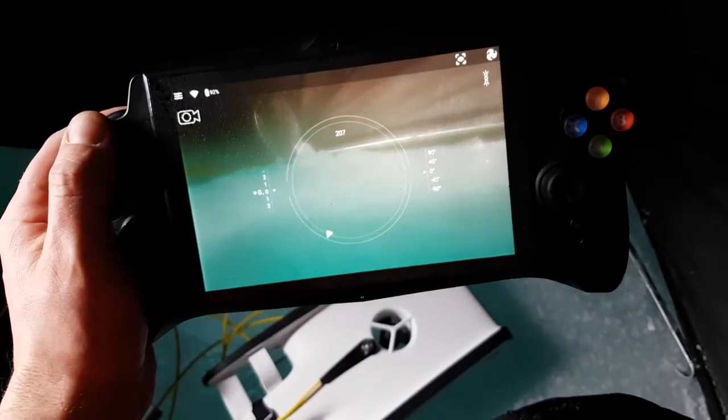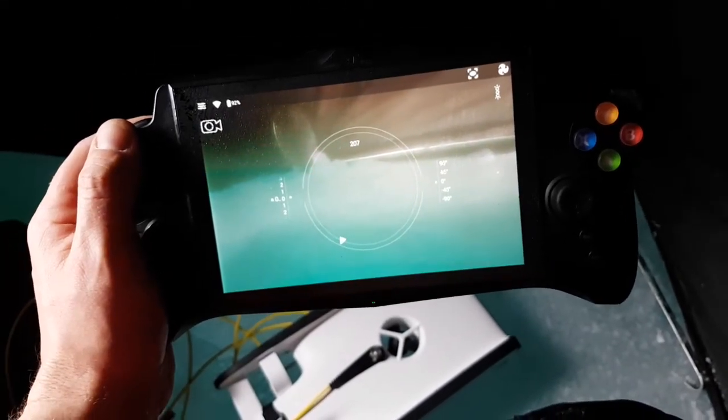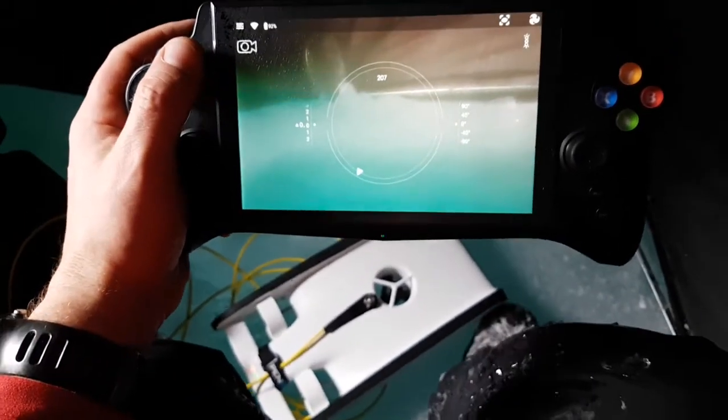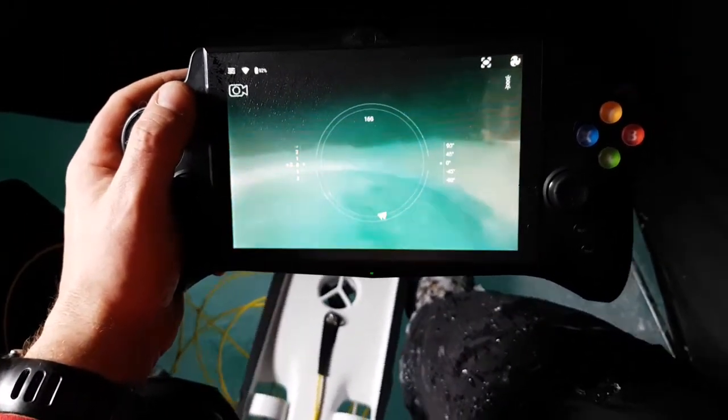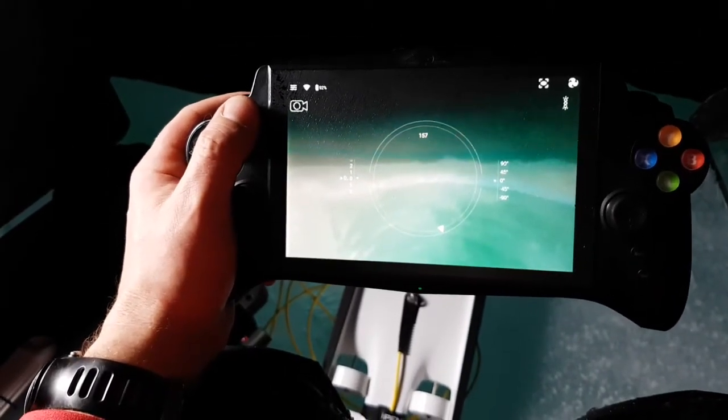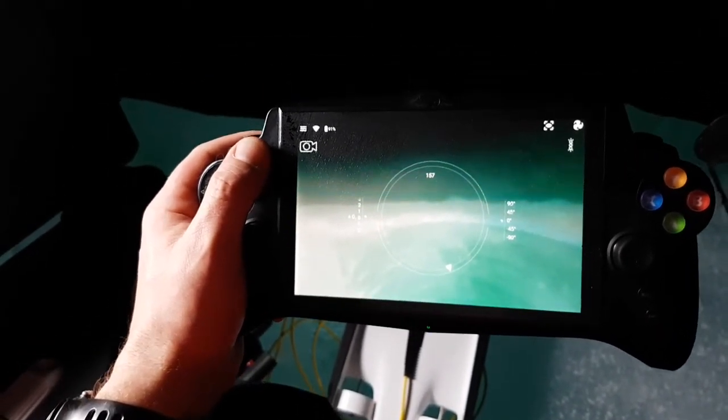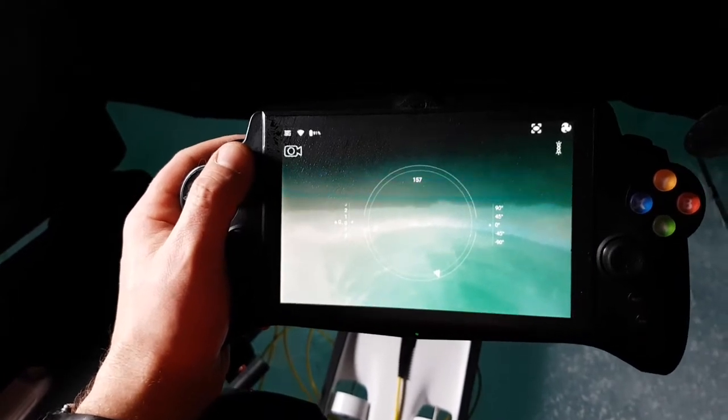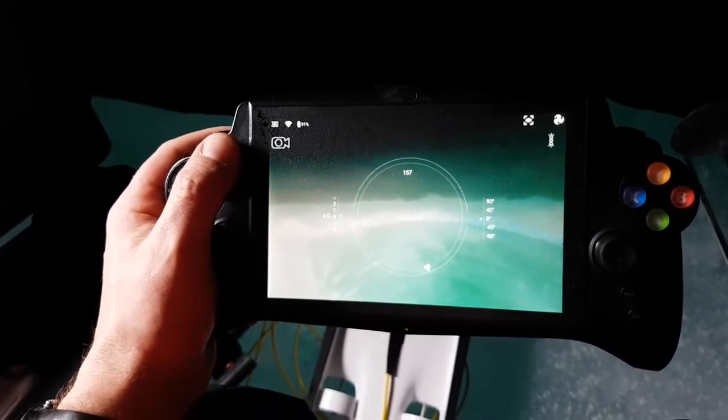So we've got the remote connected as you can see here connected to the ROV and we'll have a visual view of what happens when we go in the water. So we're going to need two hands for this bit so we're actually going to switch to the recording on the ROV.